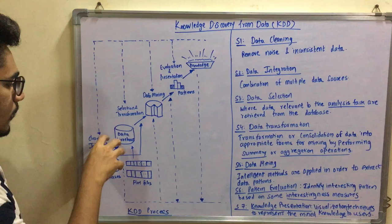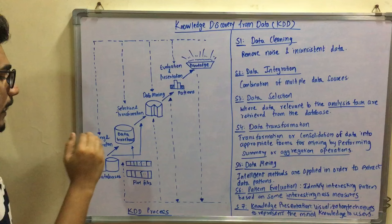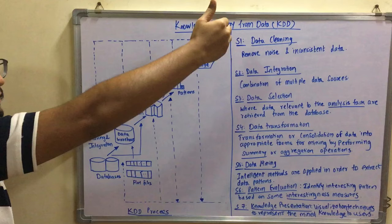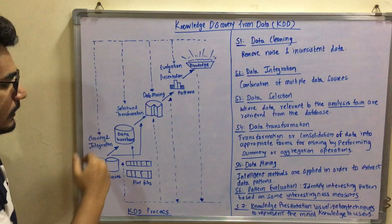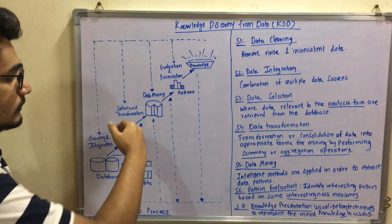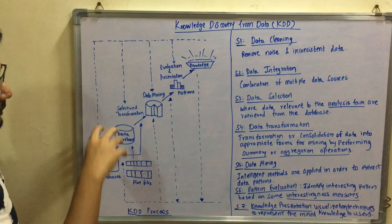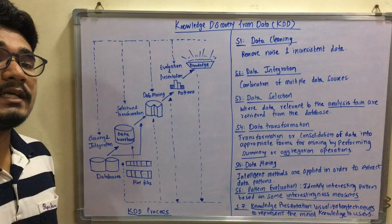From the data warehouse it goes up to a higher layer. At the very first layer you have the cleaning and integration process, which go hand in hand. After the data is moved up from the data warehouse, it goes to the higher step where you have selection and transformation — only data which is relevant to your application or analysis tasks are retrieved from that.